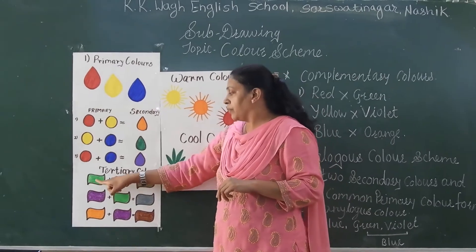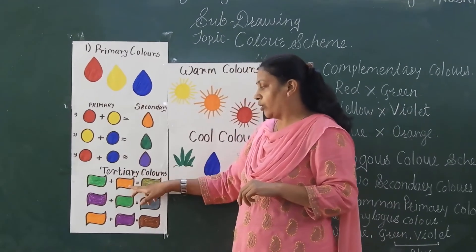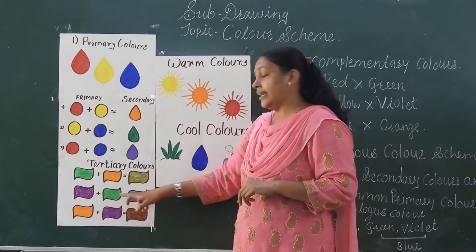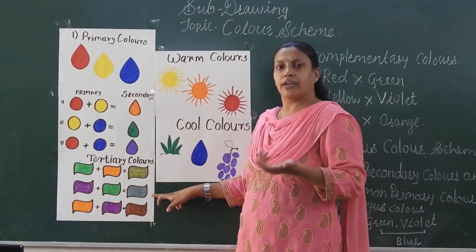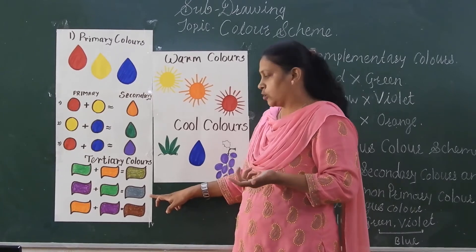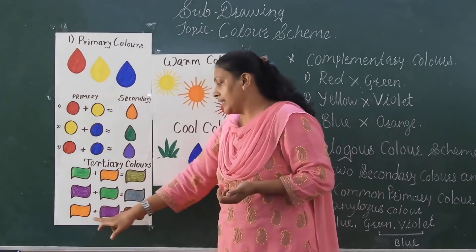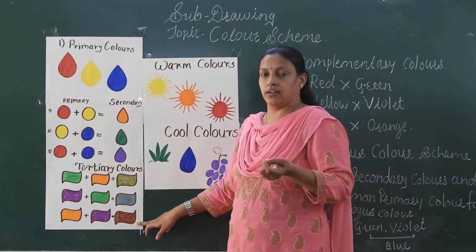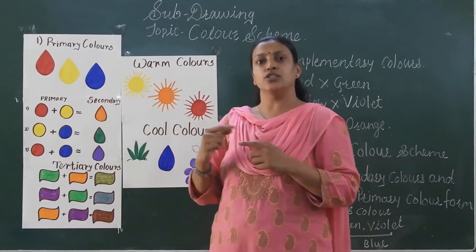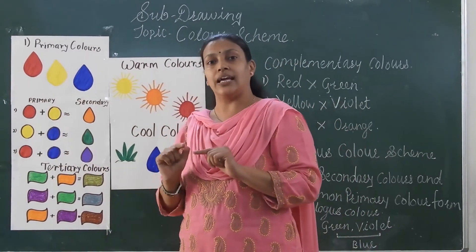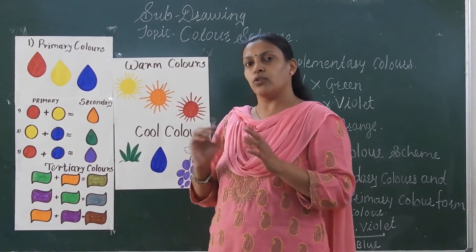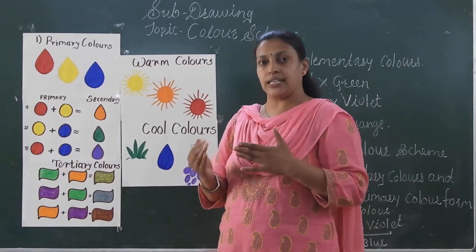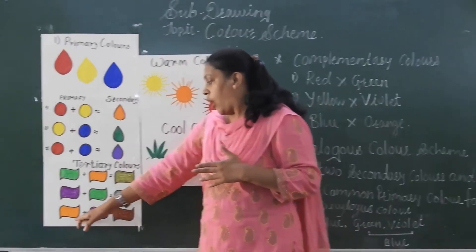For example, green and orange mixed together give olive color. Violet and green give slate — also called a grey-toned color. Orange and violet become a rust color — rust color is deeper than orange, closer to red, and has a golden-brown tone.